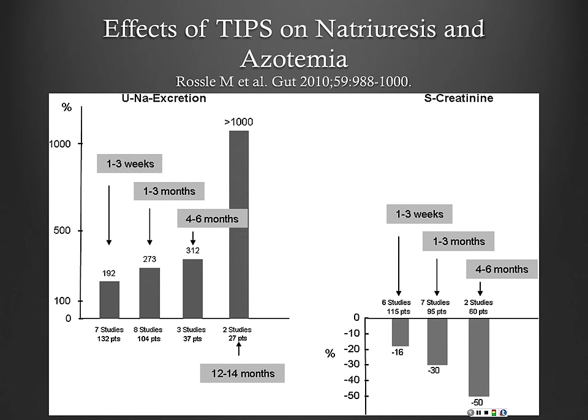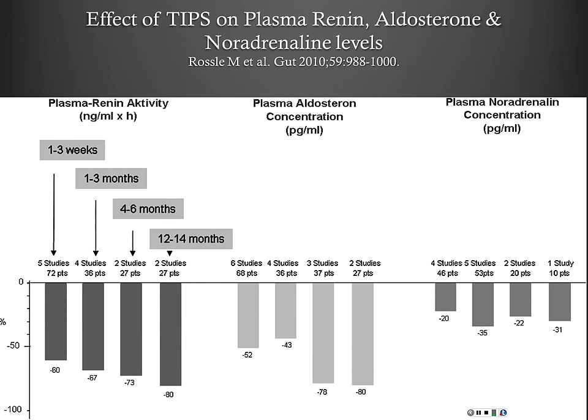This is data on the effects of TIPS regarding urinary sodium excretion and serum creatinine. Over time there's a dramatic increase in urinary sodium excretion — which is the main mechanism driving ascites formation. This improves ascites overall and actually has a beneficial effect on serum creatinine — almost a 50% reduction after six months in patients who have undergone TIPS.